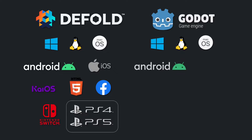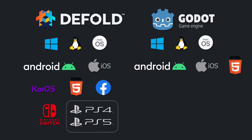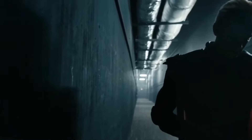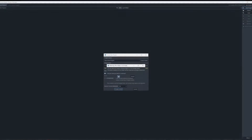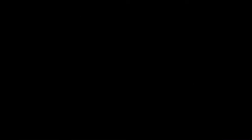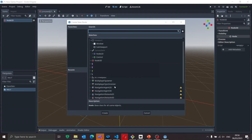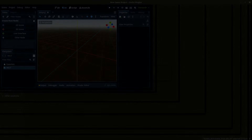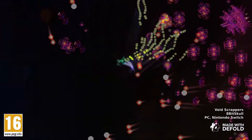Godot allows you to build for almost the same platforms — Windows, Linux, Mac, Android, iOS, and HTML5 — with the possibility to release on consoles using third-party commercial companies, mostly ones run by Godot core contributors. Godot 4.0 adds the possibility to build for virtual and extended reality platforms too. The Godot editor works on Windows, Mac, and Linux, and also has a web and Android version of the editor since 3.5. My first experience with Godot 4.0 on Windows was problematic, so for now it's better to stick to 3.5.1.